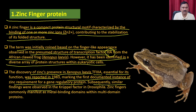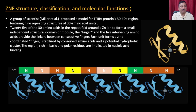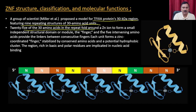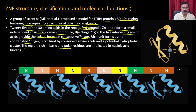Subsequently, similar findings were observed in the Cooper factor in Drosophila. In a typical zinc finger protein, a proposed model for the TF3A protein features 9 repeating regions of 30 amino acids. Twenty-five of the 30 amino acids in the repeat fold around a zinc ion to form a small independent structural domain — the finger. The 5 intervening amino acids provide linkage between consecutive fingers.